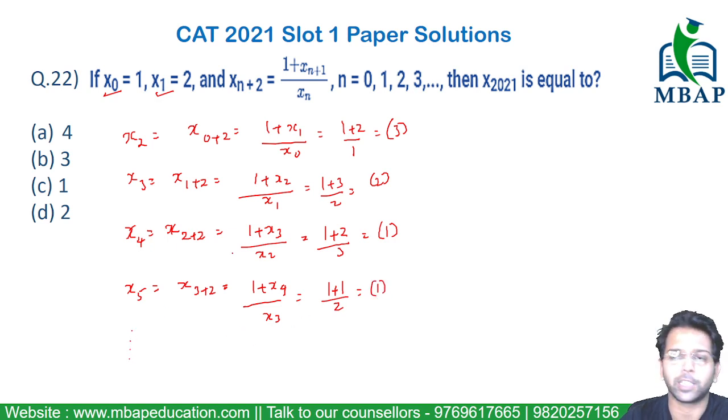Obviously you will find some more values of x₆, x₇, and x₈. The logic which you will be able to find: let's see the first 5 terms. x₀ has been given to you as 1. x₁ has been given as 2. x₂ you found to be 3. x₃ has come out to be 2. x₄ has come out to be 1, and x₅ has also come out to be 1.